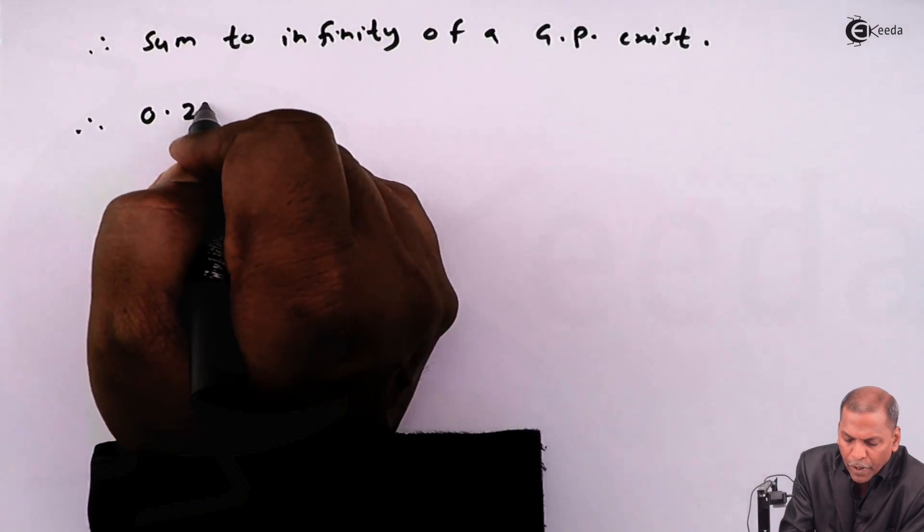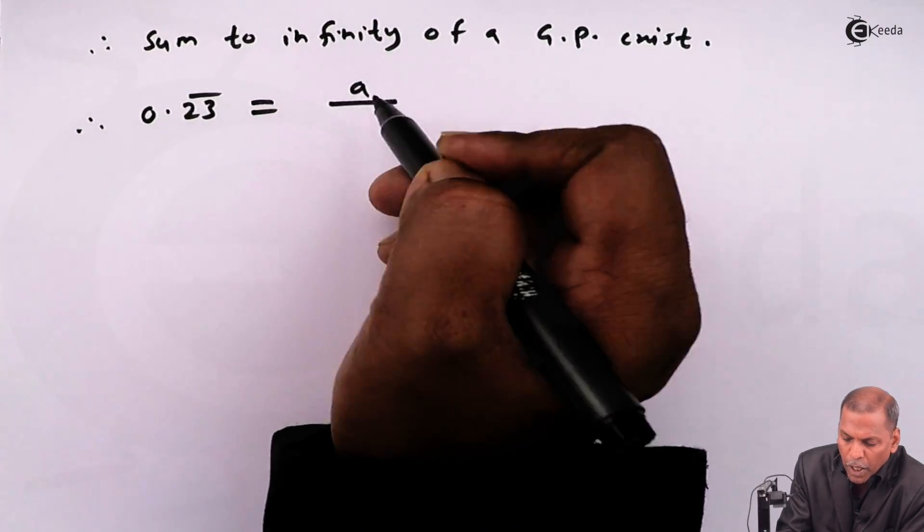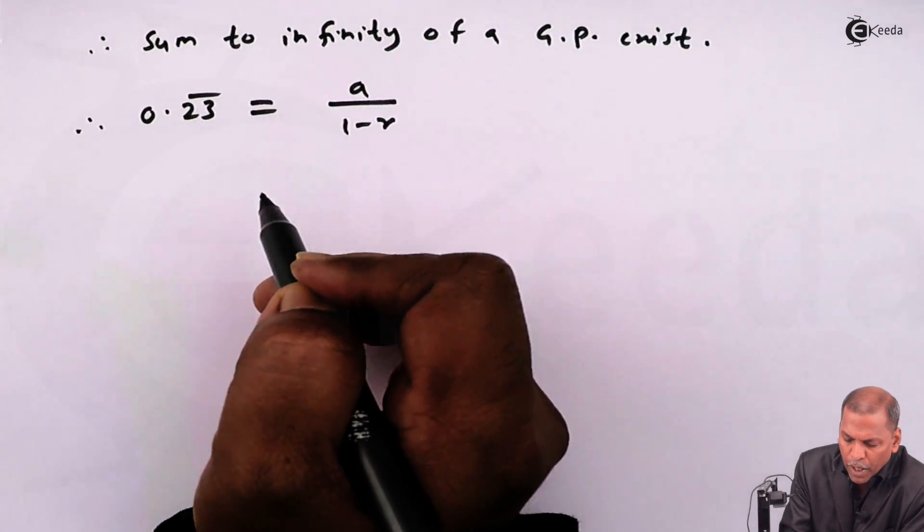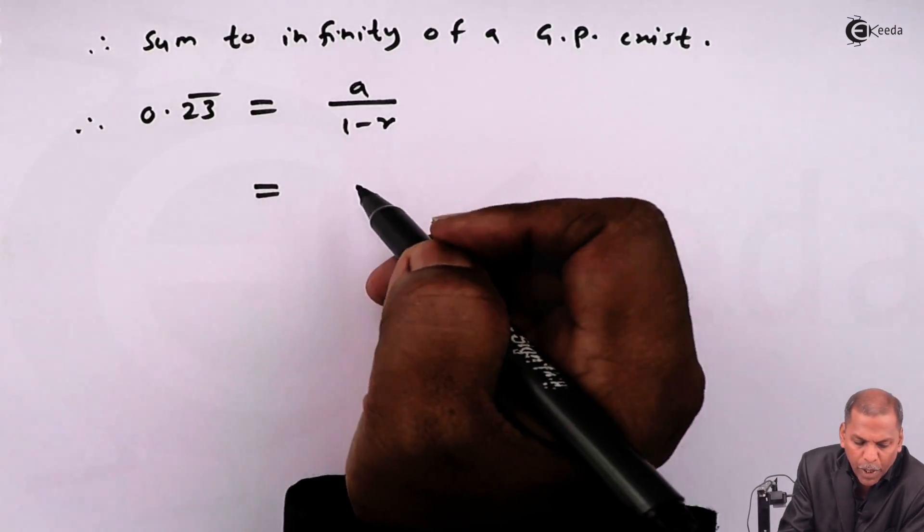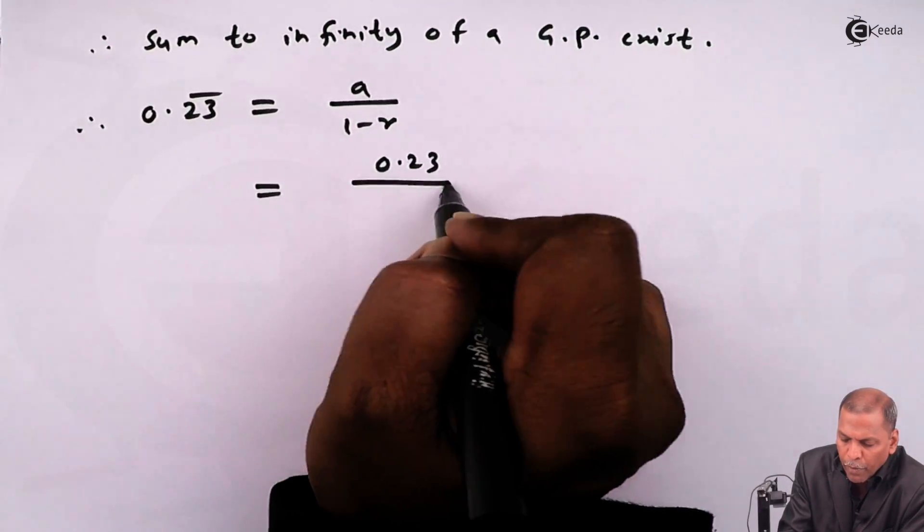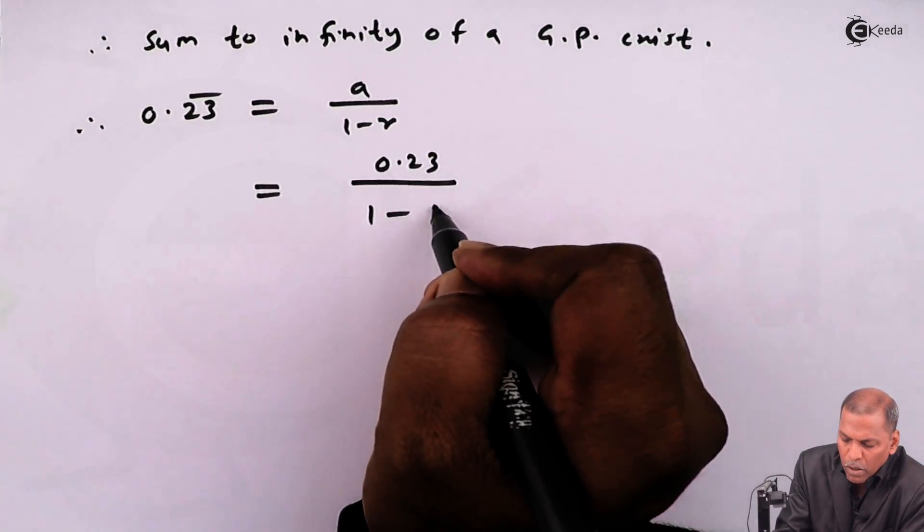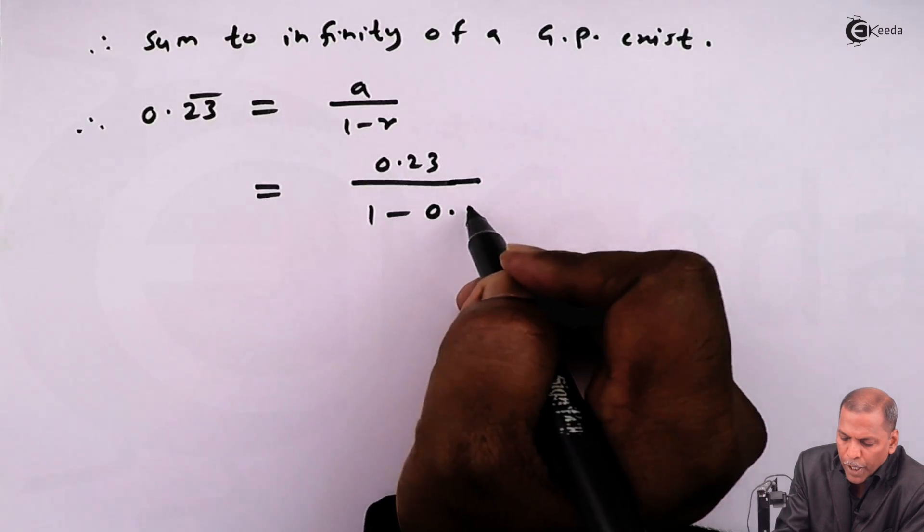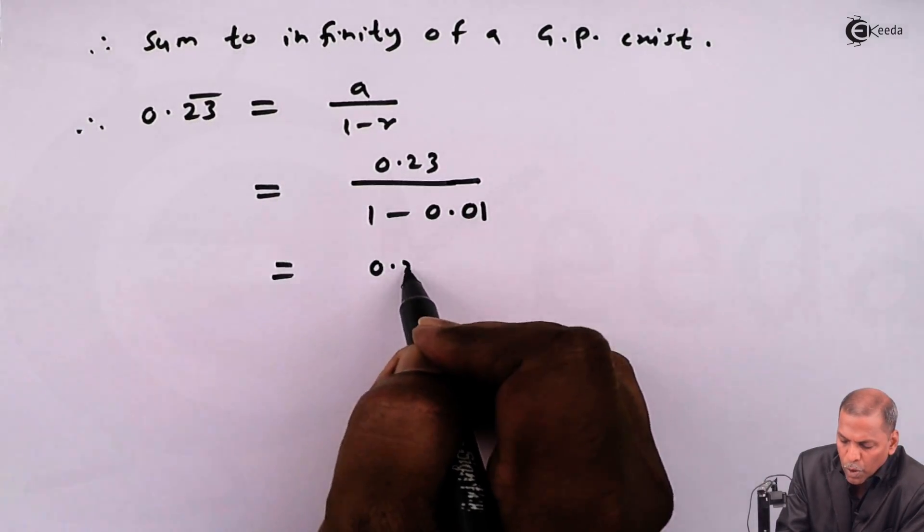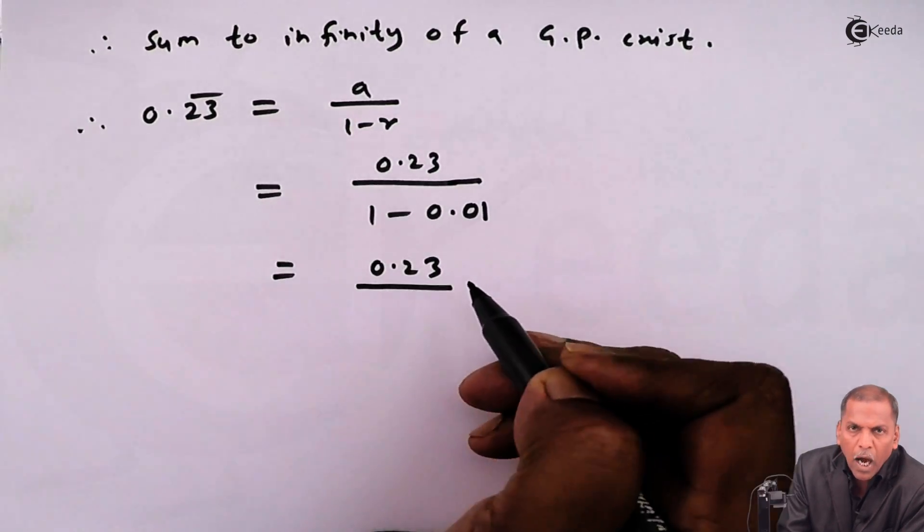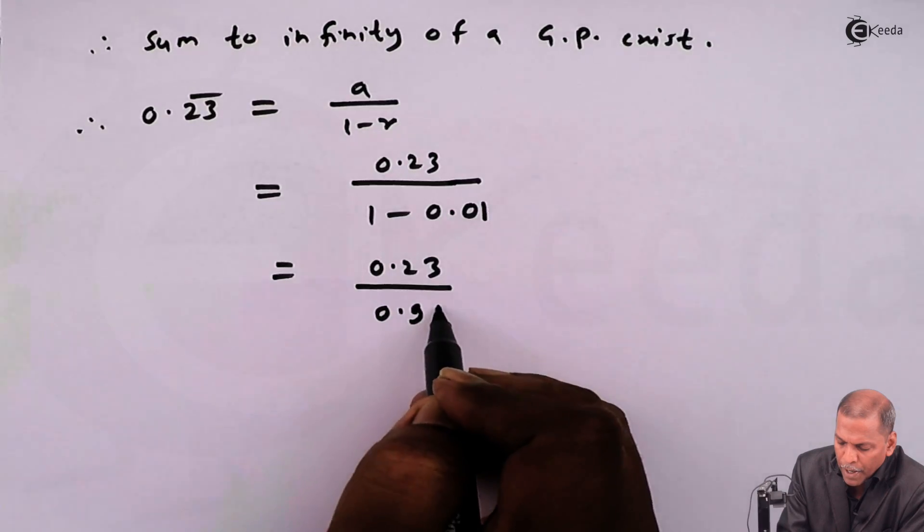0.23 bar is equal to a upon 1 minus r, that is equal to, for a we substitute the value 0.23 upon 1 minus r. For r we replace 0.01 and that equals 0.23 upon 0.99.